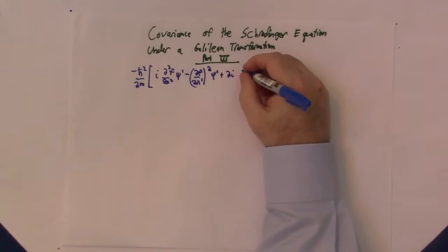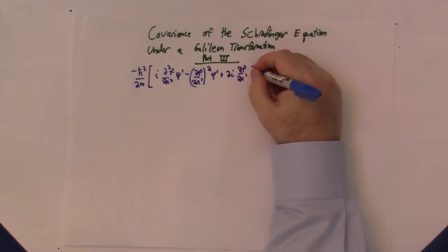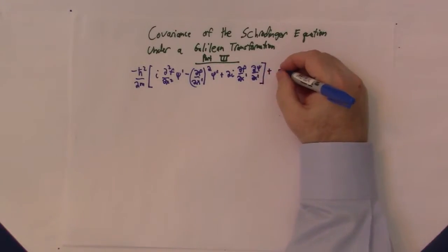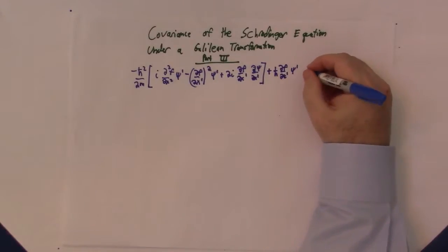One is f is a real function. That will enable us to separate out the real and imaginary parts of this equation. The other factor is that this has to hold no matter what psi is. We have complete freedom on f, but we don't know what psi is. So by setting the coefficients, we have two independent coefficients on psi.